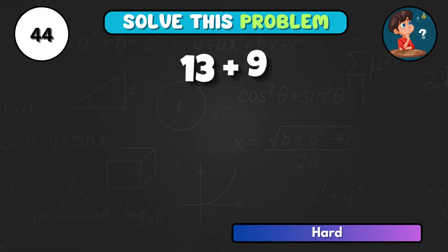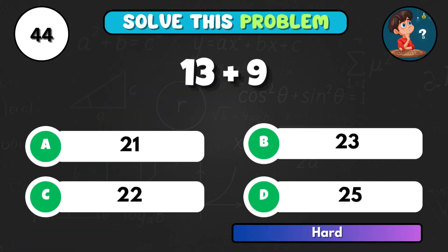Add 13 and 9, what do you find? Correct choice C, total is 22.